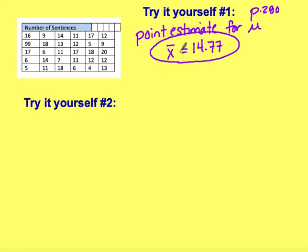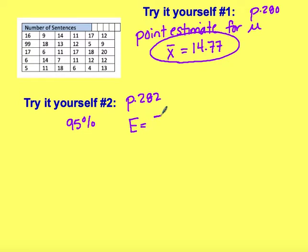I'm going to hold on to that sample mean of 14.77 because I'm going to need it. Moving on to Try It Yourself number 2, at the bottom of page 282, it asks us to use that data and find the margin of error at a 95% confidence level. So what we're looking for is E, which is one of the formulas from class: E equals the critical value Z times the population standard deviation.